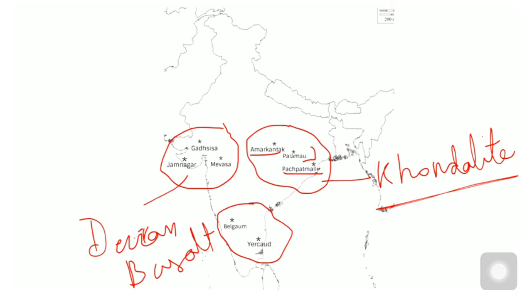And in South India, Yercaud and Belgaum. These deposits are also very important. Yercaud is also formed on Khondalite. So you should remember these names related to bauxite deposits in India.